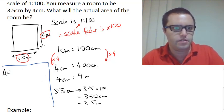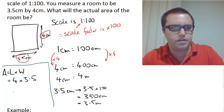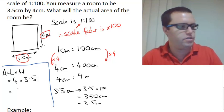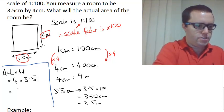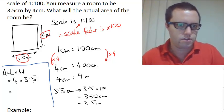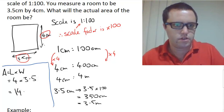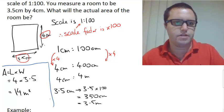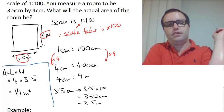The area is length times width, which is 4 times 3.5, which is 14. 14 meters squared.